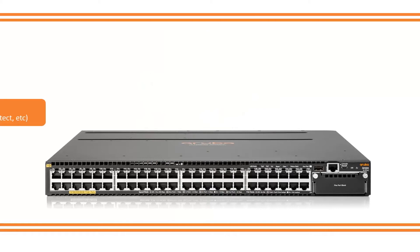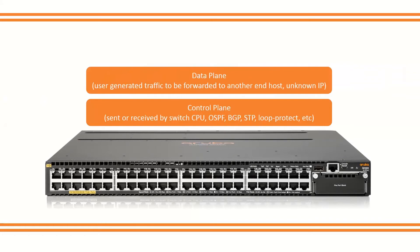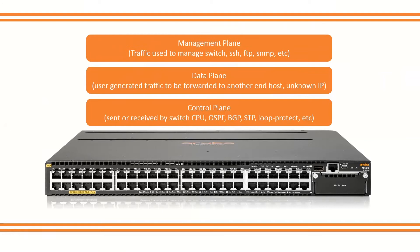We can divide the traffic forwarded to the CPU into three different types. The first is Control Plane — all the traffic that forms a network, sent or received by the switch CPU. On layer 3 this can be OSPF or BGP packets; on layer 2, spanning tree or loop attack traffic. The second type is Data Plane — user-generated traffic forwarded to another end host, for example to a known IP destination. The third is Management Plane — all traffic used to manage the switch, such as SSH, FTP, and SNMP.